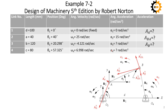In the acceleration analysis, the angular acceleration for link number one is again zero because it is not moving. The angular acceleration alpha 2 is given as 15 radians per second squared, which is available to us.